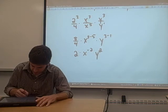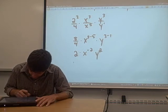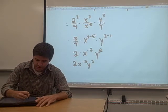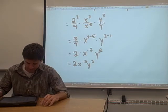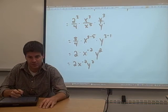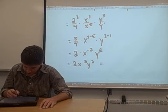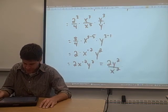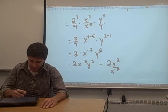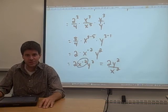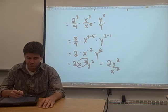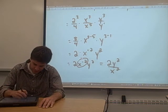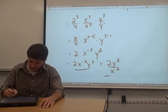There are a couple ways we can write this final answer. We can write this as 2x to the negative 2 y squared, or we could write it as 2y squared over x squared. Notice what we did there is we used the property of exponents that says when you have a negative exponent, you can move that whole term to the denominator and make the power positive. Either one of these two answers is perfectly fine.